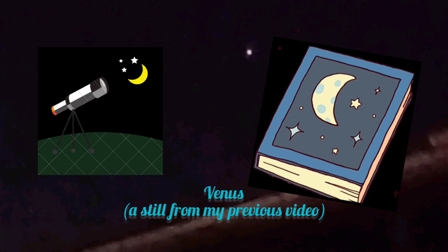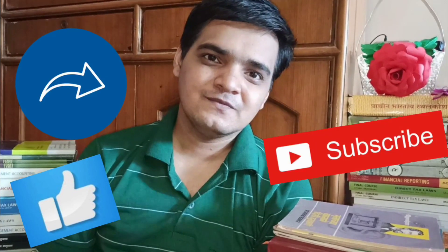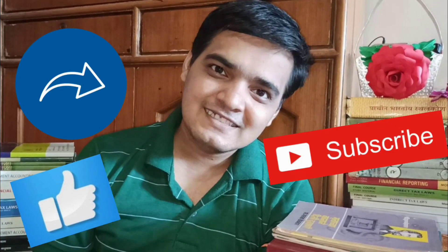Now it's my turn to ask you a question: how many constellations have been recognized as of today by the International Astronomical Union? Is it 12, 30, 76, or 88? Drop your answers in the comment section at the end of this video. If you like this video, do let me know your suggestions, and don't forget to like, share, and subscribe. Keep watching the stars — they are waiting.